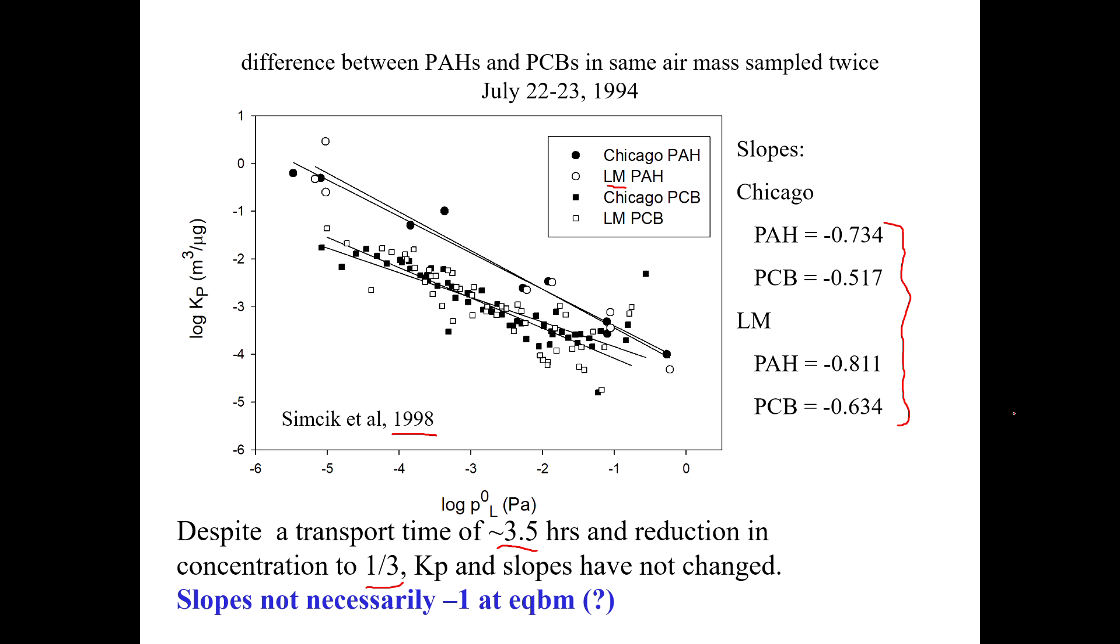That's all I really wanted to say about gas particle partitioning. I just want you to understand that it is a function of things like the amount of organic carbon, the amount of elemental carbon in the system. It's a function of the temperature and vapor pressure of the chemical, and also to some extent the relative humidity, because lots of atmospheric particles are hygroscopic, which means they will suck moisture out of the air, and that will affect their properties.